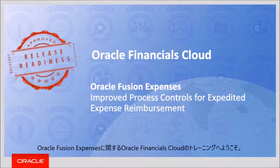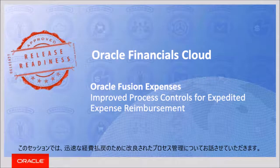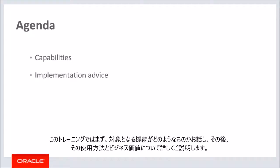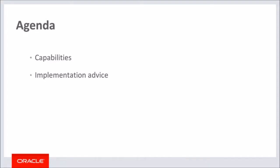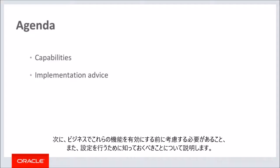Hello, my name is Archana. Welcome to training for Oracle Fusion Expenses in Oracle Financials Cloud. In this session, we talk about improved process controls for expedited expense reimbursement. For the capabilities covered in this training, we explain what they do, followed by more detail to explain how you can use them and what business value they bring. Then we explain what you need to consider before enabling these features in your business and what you need to know to set them up.